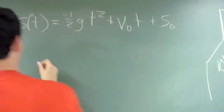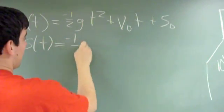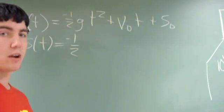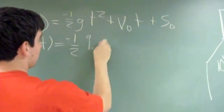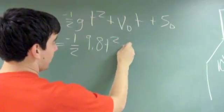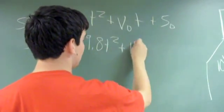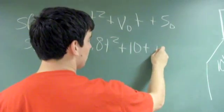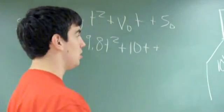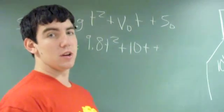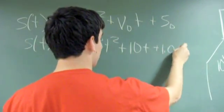Now, S of T equals negative one-half — force of gravity is 9.8 — so that would be negative 4.9 T squared, plus the original velocity of the basketball, which would equal 10, times T, plus the original height of the player shooting the basketball, which in this case is 6'3", but in meters it is 1.09.